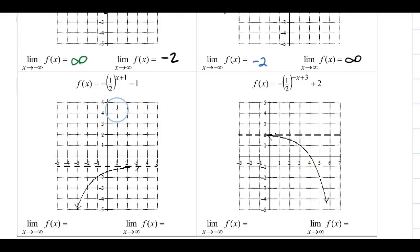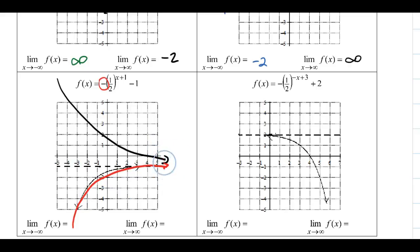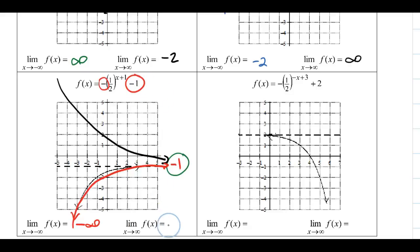For the next function with a fraction base and a negative in front, the negative causes a vertical reflection. What was heading up now goes down. To the right, the graph still levels off toward the asymptote at the y-shift value of negative 1. To the left, instead of heading toward positive infinity, the graph heads toward negative infinity.